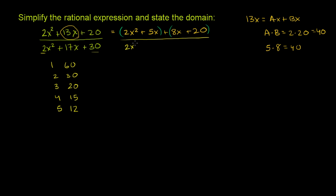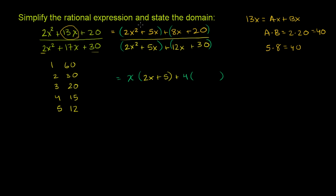So let's separate the denominator into 2x² plus 5x plus 12x plus 30, and group those terms. For the numerator's first group, factor out x: x times (2x + 5). For the second group, factor out 4: 4 times (2x + 5), since 8x ÷ 4 = 2x and 20 ÷ 4 = 5.